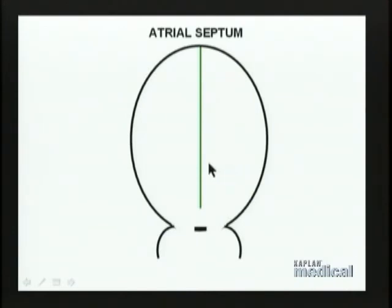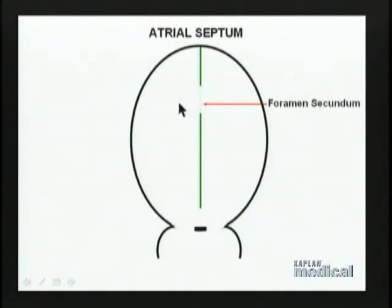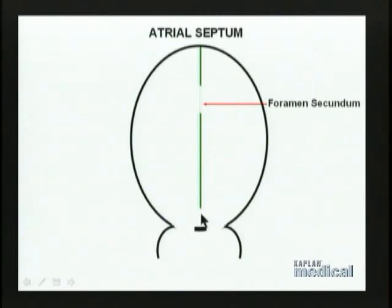So what we're going to do is the following. Before septum primum completes its growth downward toward the endocardial cushion — before foramen primum closes — an opening will form in septum primum as a result of programmed cell death called apoptosis. There will develop a perforation in the septum in this region. That perforation will be given the name foramen secundum, the second opening. So while foramen primum is not a hole in septum primum, foramen secundum is a hole in septum primum. And it's very important to recognize that foramen secundum opens before foramen primum closes, so that we will have a continuous passageway for blood to get from the right side to the left side.